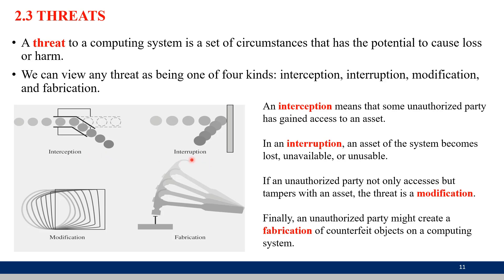The second kind of threat is interruption. The sender is on the left and the receiver is on the right side. Whatever data is sent by the sender, it is going to be completely blocked or stopped, and then it goes directly to the attacker. The attacker takes a copy of all the data, and the receiver is not going to receive anything. This is called interruption — it is a loss of availability, meaning the data is not available to the receiver.